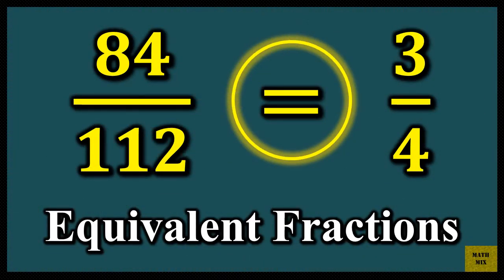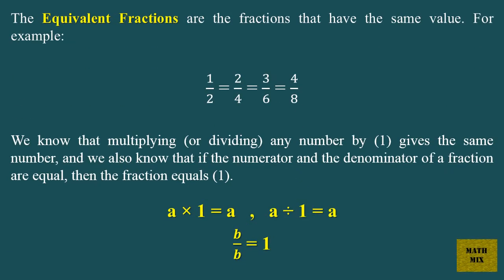Equivalent fractions are fractions that have the same value. For example, 1 over 2 equals 2 over 4, which equals 3 over 6, which equals 4 over 8. We know that multiplying or dividing any number by 1 gives the same number, and we also know that if the numerator and the denominator of a fraction are equal, then the fraction equals 1.